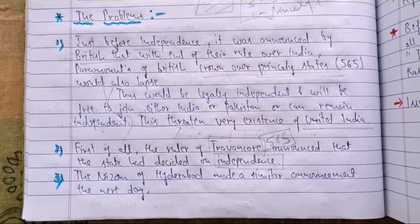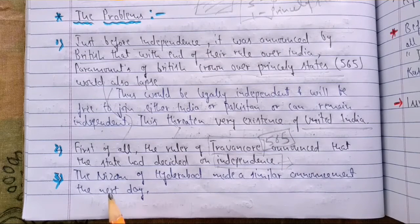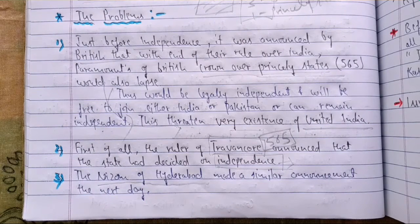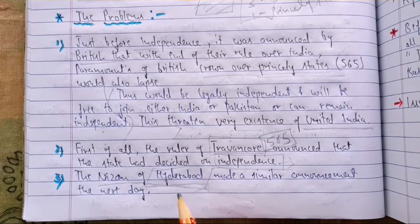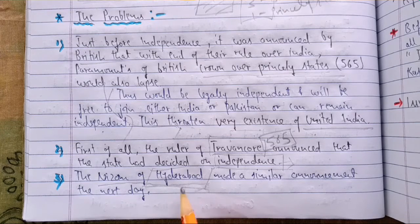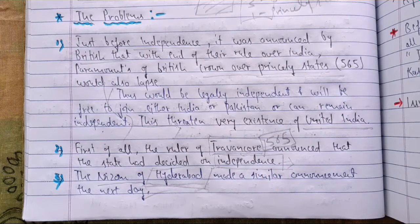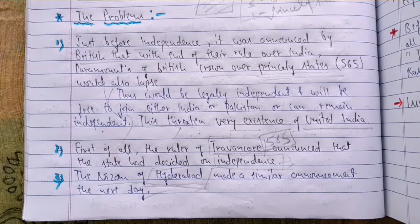Two days after that, the Nizam of Hyderabad made a similar announcement. He was considered one of the richest people in the world at the time of independence, and Hyderabad was the largest and biggest princely state of India - its territories eventually merged with Karnataka, Andhra Pradesh, and other states. The Nizam followed the same policy as Travancore, and out of the three options given by the British, he opted to be a separate independent state.